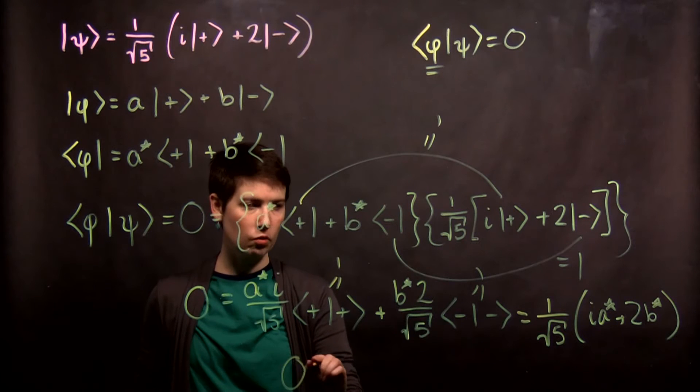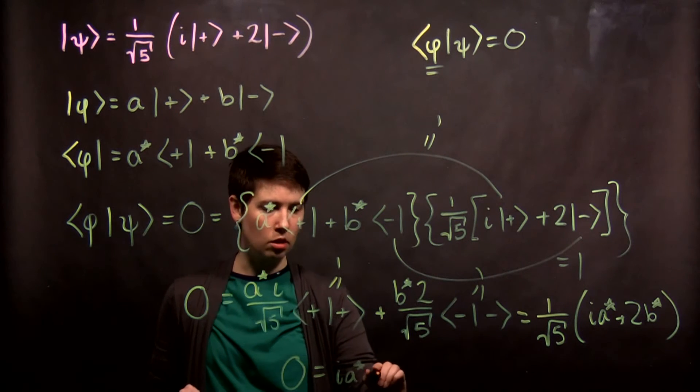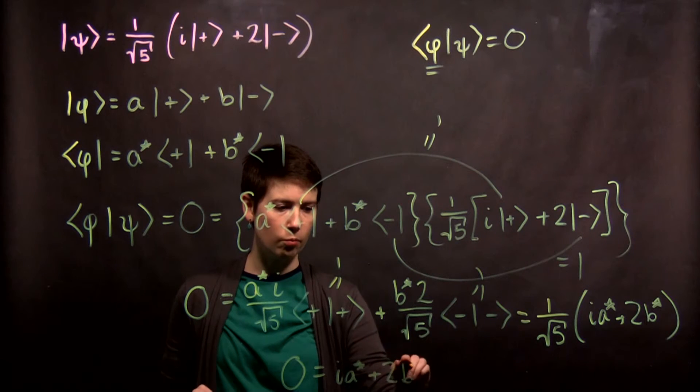So that leaves 0 equals i a star plus 2b star.